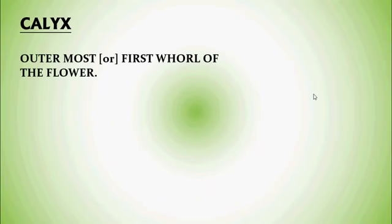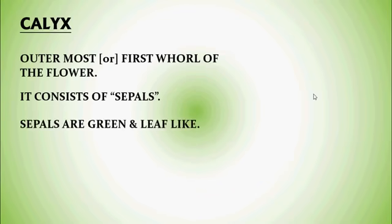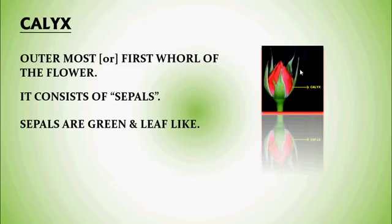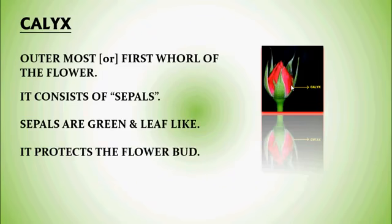Calyx — the outermost or first whorl of the flower is called Calyx. It consists of sepals, and these sepals are green or leaf-like structures. In the photograph, this flower bud shows green color leaf-like structures called sepals. These sepals protect the flower bud.